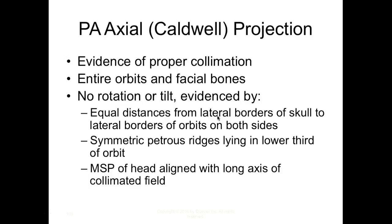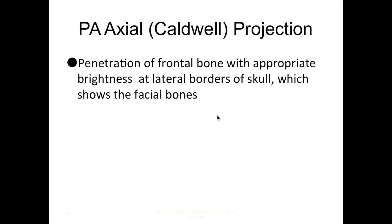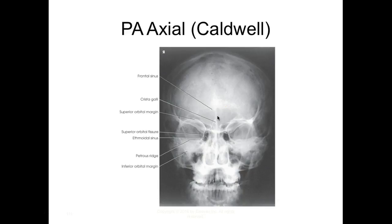For the PA Caldwell: proper collimation, entire orbits and facial bones visible. No tilt or rotation by equal distance from lateral borders of skull to lateral borders of orbits on either side. Symmetric petrous ridges lying in the lower third of the orbits. MSP aligned with the long axis of the collimated field. Adequate penetration of the frontal bone with appropriate brightness at the lateral borders. Labeling: frontal sinus, crista galli, superior orbital margin, superior orbital fissure, ethmoid sinuses, petrous ridge in lower third, and infraorbital margin.